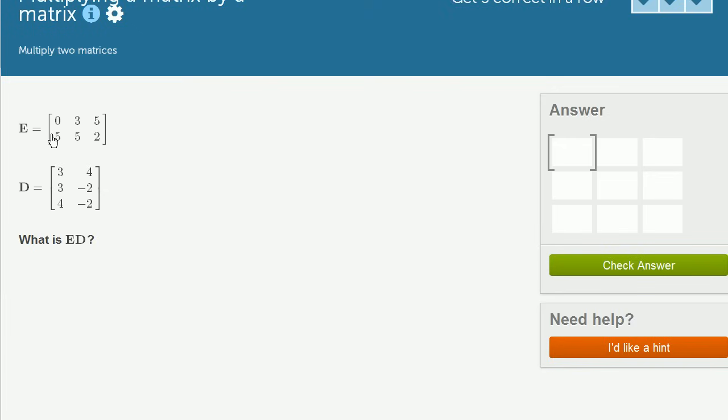We're given two matrices over here, matrix E and matrix D. And they ask us, what is ED, which is another way of saying, what is the product of matrix E and matrix D?